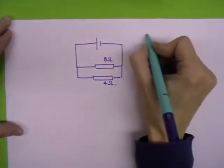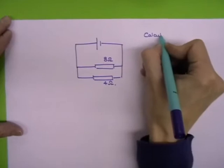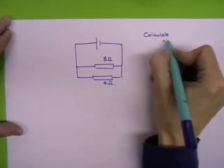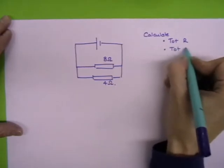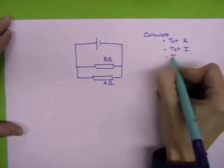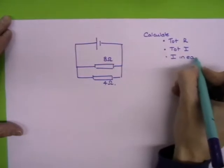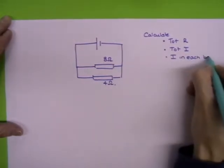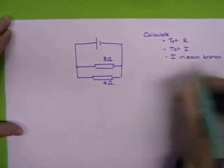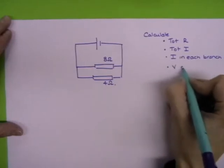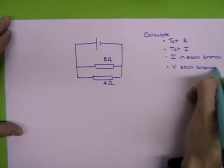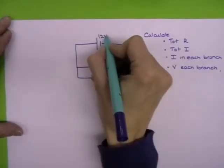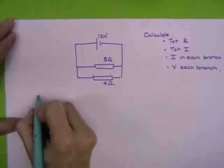And if you're asked to calculate the total resistance, the total current in the circuit, the current in each branch, and the voltage across each branch, the voltage I should put in is 12 volts.